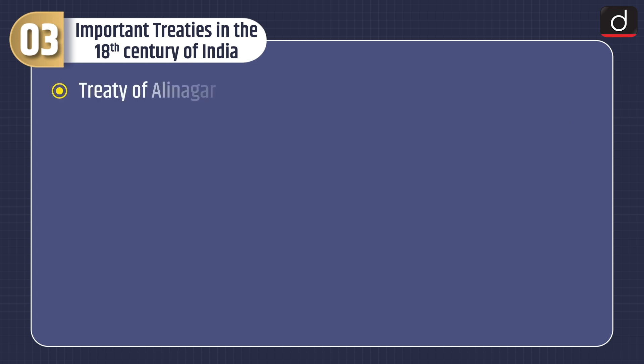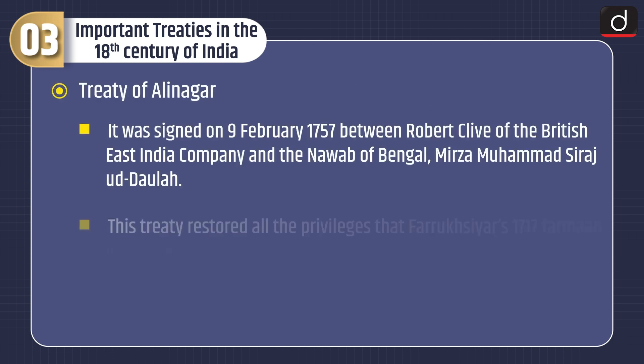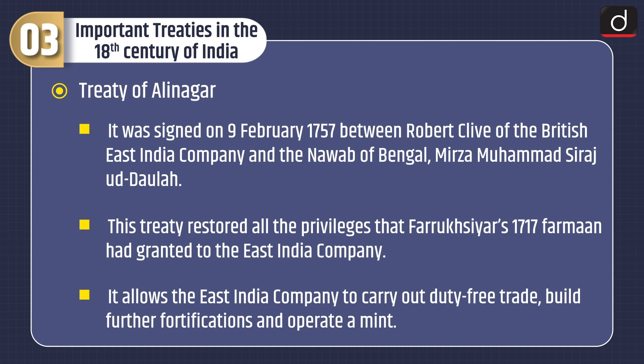Treaty of Alinagar. It was signed on 9 February 1757 between Robert Clive of the British East India Company and the Nawab of Bengal, Mirza Muhammad Siraj-ud-Daulah. This treaty restored all the privileges that Farrukhsiyar's 1717 firman had granted to the East India Company. It allowed the East India Company to carry out duty-free trade, build further fortifications, and operate a mint.